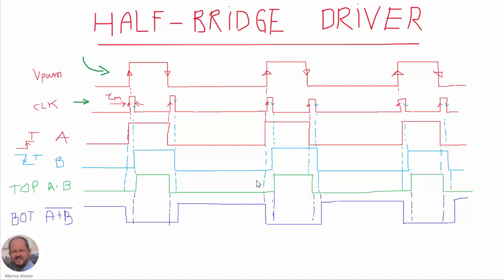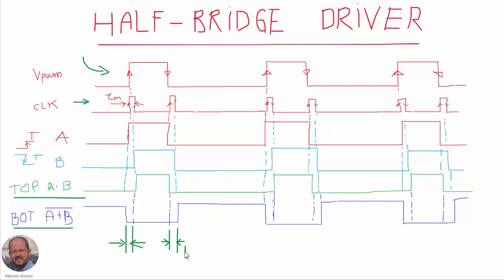So now it is very easy to generate the final signals that we want. For the top transistor, we are going to generate the AND operation between A and B — A times B — giving us the signal shown in green. For the bottom transistor, we perform the NOR operation, NOT(A + B), generating the other required signal. Between these two signals, at the end, we are going to have a dead time equal to the duration of these pulses, which we can control by controlling the duration of the pulses.